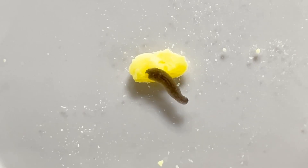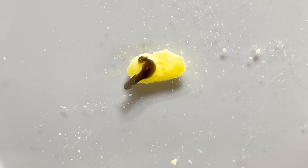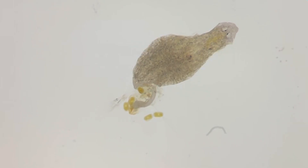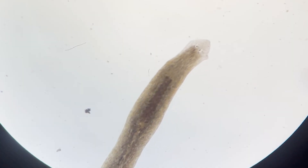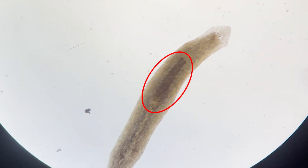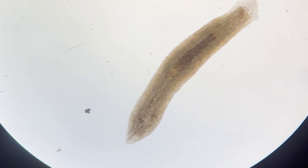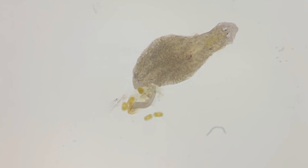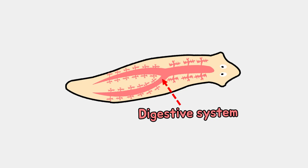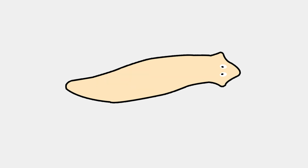It is a little unique to see them eating food. That's because planaria's mouth is located in the middle of the body, not on the head. This part is the pharynx of the planaria, so the food enters through the belly side of the mouth, passes through the pharynx, and spreads all over the body. There's no anus, so excrement is also discharged through the mouth.